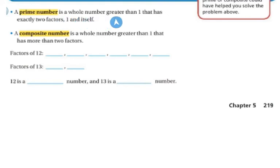A prime number is a whole number greater than 1 that has exactly 2 factors, 1 and itself. But a composite number is a whole number greater than 1 that has more than 2 factors. So 13 was a prime number, but 12 was a composite number because 12 had more factors.